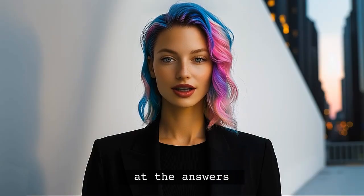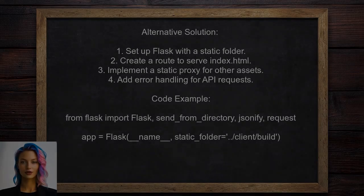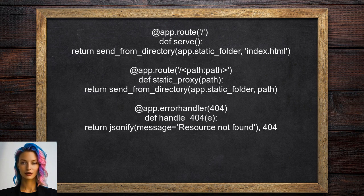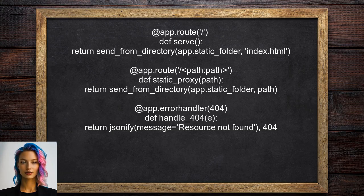Now let's look at the answers provided by other users. An alternative approach involves setting up a Flask application to serve a React app built with Create React App. They define a static folder in the Flask app and create routes to serve the index.html file and other static assets. This method also includes error handling for 404 and 405 responses, ensuring that API requests are managed correctly.